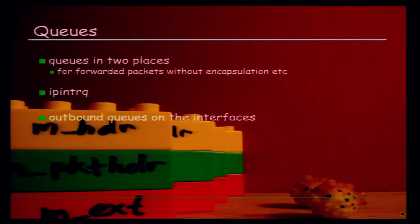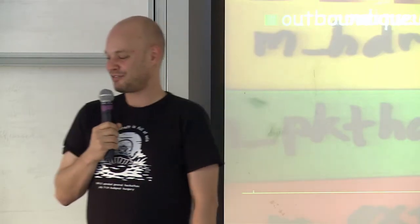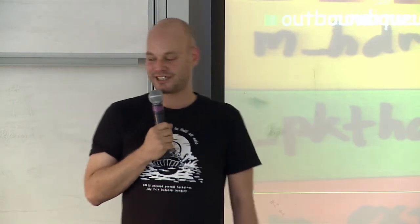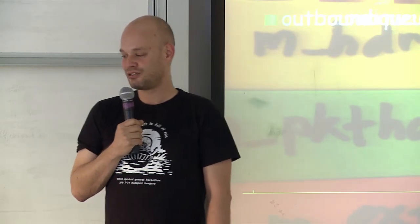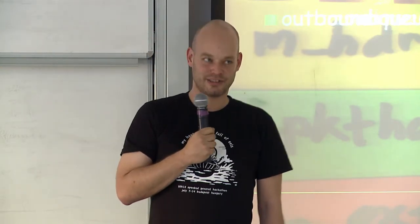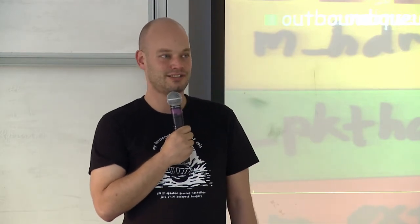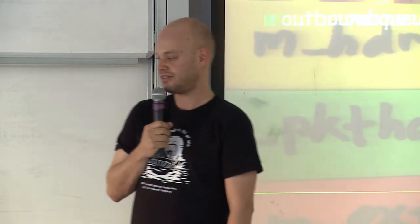For the typical and simple case — forwarded, no encapsulation, no IPsec, no tunnels, no IPv6, no bridges — there are two queues: the aforementioned IP interrupt queue and the queues on the NICs for the outbound direction.